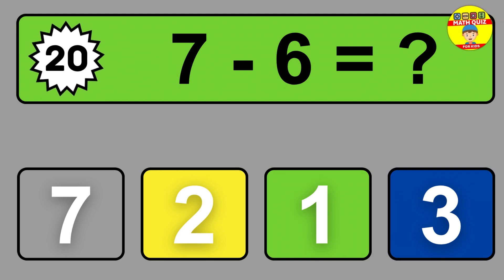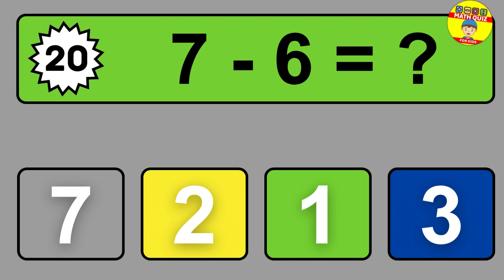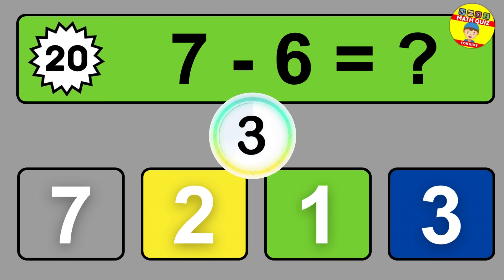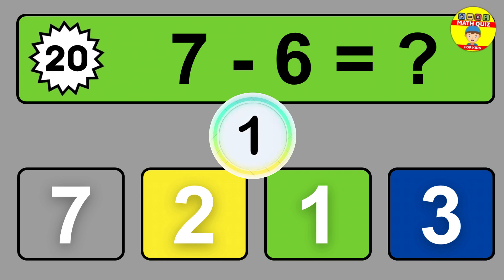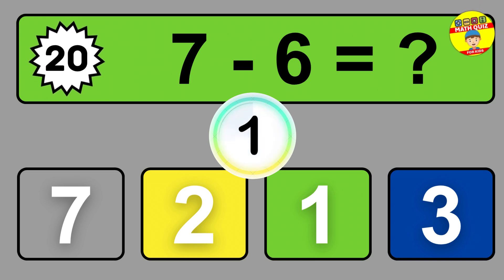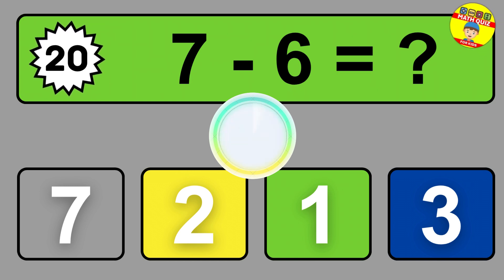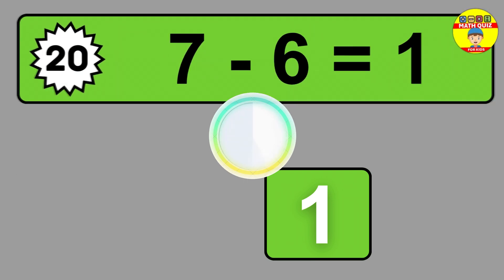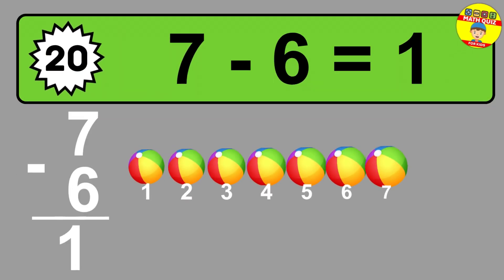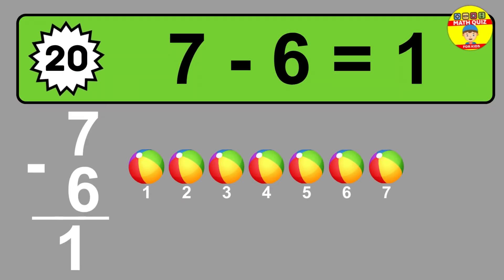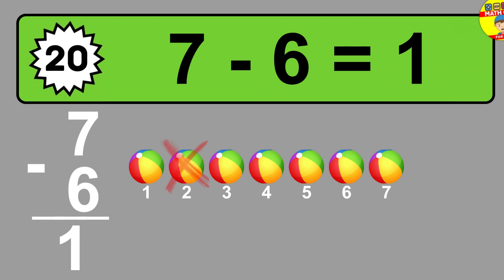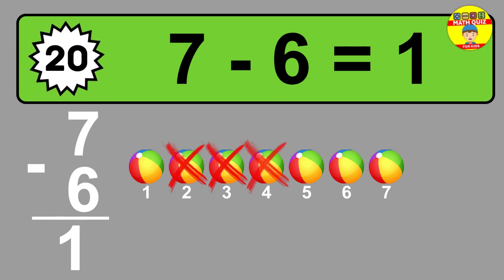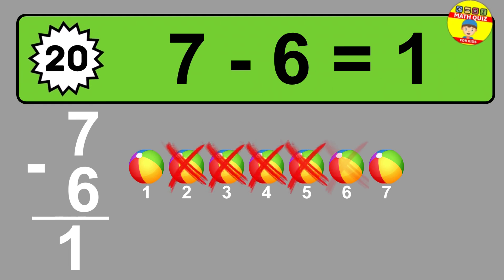Question 20. 7 minus 6 equals what? So the answer is 7 minus 6 is 1. Let's count it: 1.